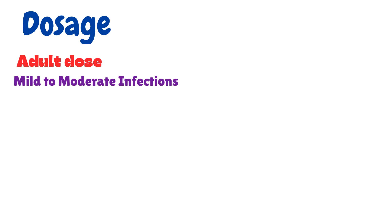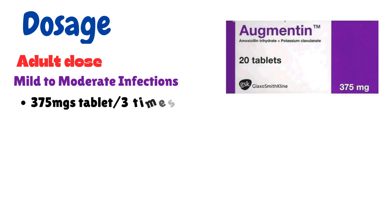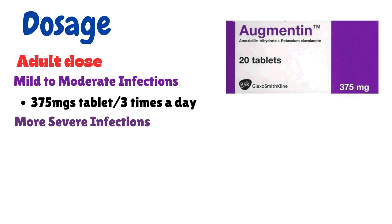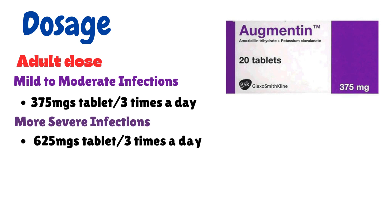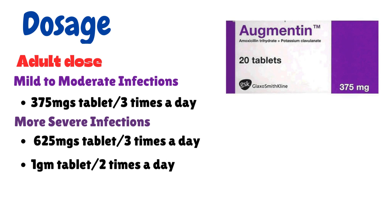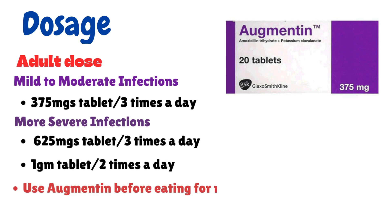Dosage of tablet: The usual adult dose for mild to moderate infections is 375 mg tablet 3 times a day. For more severe infections, 625 mg tablet 3 times a day, or 1 g tablet 2 times a day. Use Augmentin before eating for maximum effect.